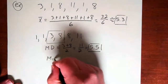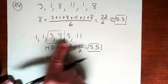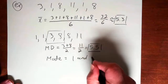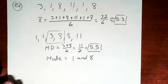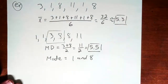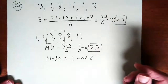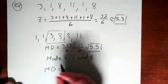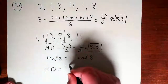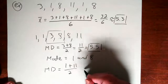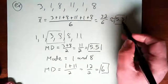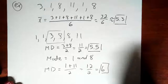The mode is the value that occurs the most. In this case, 1 and 8 both occur more than the other values, so we actually have two modes: 1 and 8. You can have more than one mode. Also, if all values occur just once, you would say there is no mode. Finally, the mid-range is the average of the minimum and maximum values: 1 plus 11 divided by 2 equals 6. So the mean, median, mode, and mid-range for this data set are approximately 5.3, 5.5, {1 and 8}, and 6.